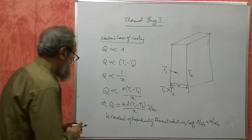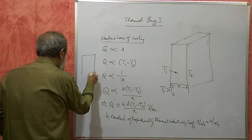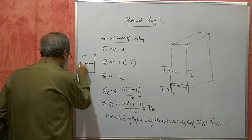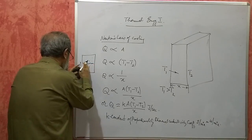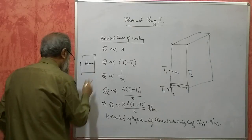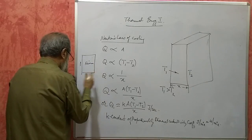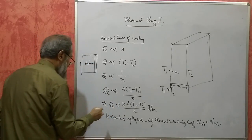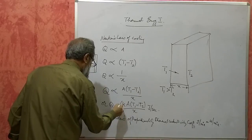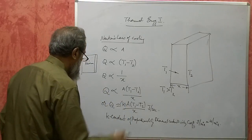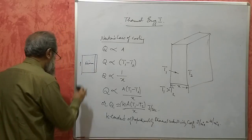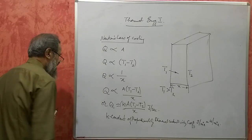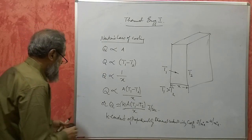Suppose we have a furnace where we are burning fuel; the inside is at a higher temperature and heat moves outside to the atmosphere. To limit this heat loss, you have to insulate the furnace. For insulation, you must use a material with low thermal conductivity coefficient so that we can save the heat that is leaking out of the furnace.